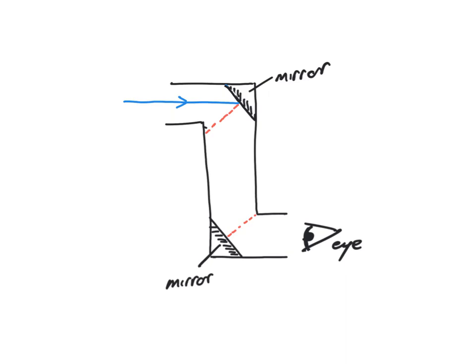Incoming light enters the periscope and is reflected from the top mirror in a straight line down to the bottom mirror. We have an angle of incidence which is equal to the angle of reflection.